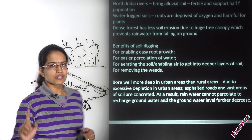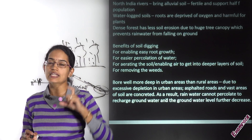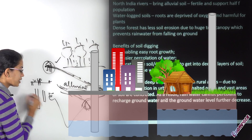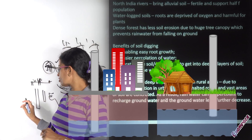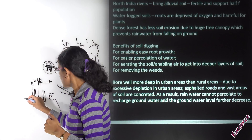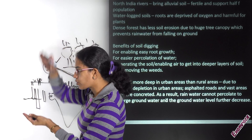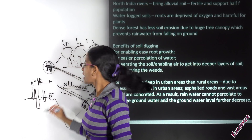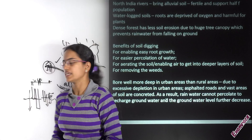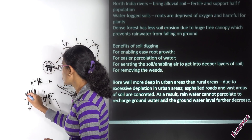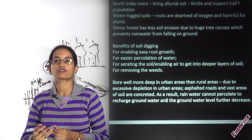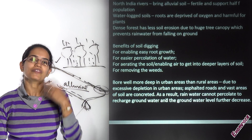An important case study is borewells. In urban areas, borewells have to go much deeper than in rural areas. This is because urban areas face depletion of water resources and cannot replenish groundwater — asphalt roads prevent percolation. In rural areas, kaccha roads allow percolation so the groundwater table remains higher. In urban areas, the groundwater table drops significantly due to lack of percolation, so borewells must be dug much deeper.